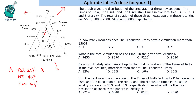For locality B, drawing a parallel line falls between 20 and 40, giving 30% for Times of India. Hindustan Times is also 30% and Hindu is 40%. For locality E, the values are 20% Times of India, 60% Hindustan Times, and 20% Hindu. So out of a total of 5000, 20% will be in Times of India, 60% in Hindustan Times, and 20% in Hindu. This is how we calculate the values.